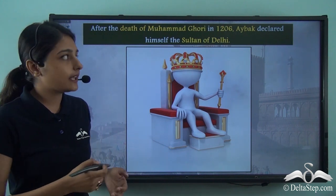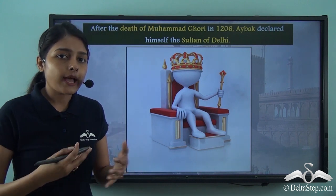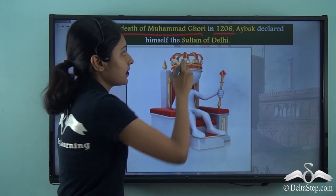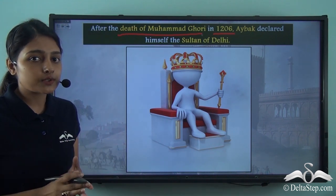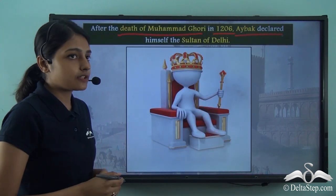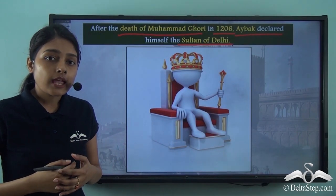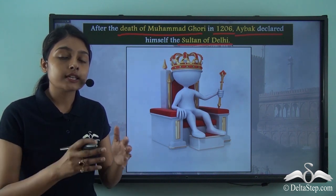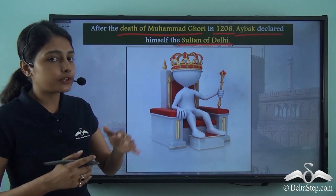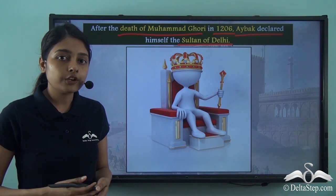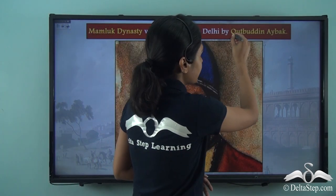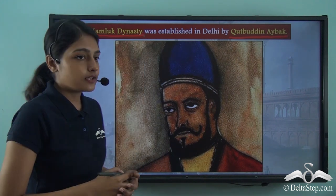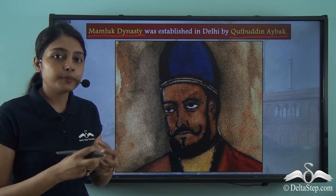After territorially expanding the Ghurid dynasty, Muhammad Ghuri appointed these viceroys to take charge of his territorial units in India, and then moved back to his homeland. So Qutubuddin Aibak was the viceroy of the Indian conquests of Muhammad Ghuri. Muhammad Ghuri died in 1206, and immediately after his death, Qutubuddin Aibak declared himself the Sultan of Delhi. He had already been appointed viceroy of all Indian conquests, and with this declaration came into being the Mamluk dynasty.